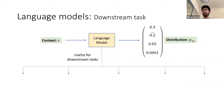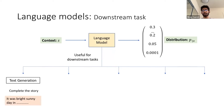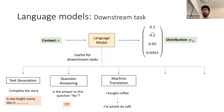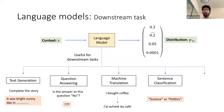Language models, especially recently, have found a lot of use in solving downstream tasks. Apart from the obvious task of generating text word by word, they can also solve other tasks like question answering, machine translation, and classification of sentences, and many more.